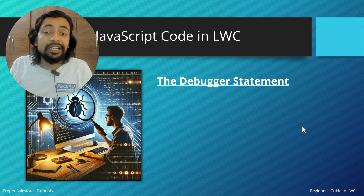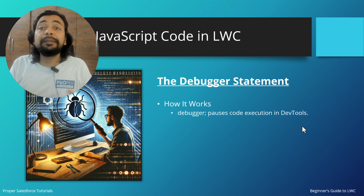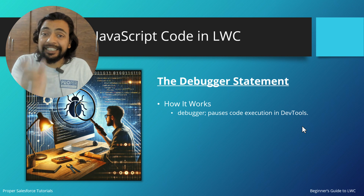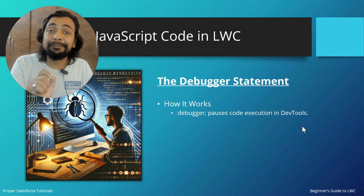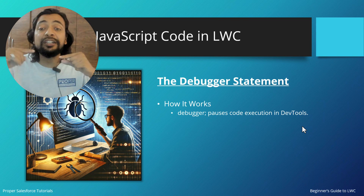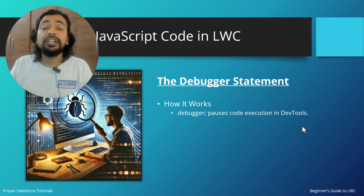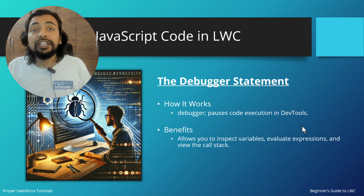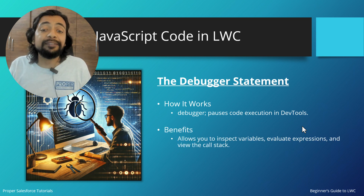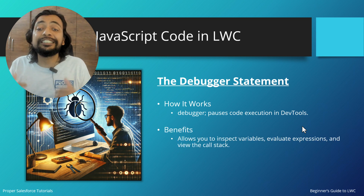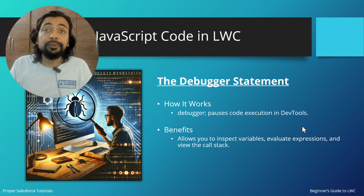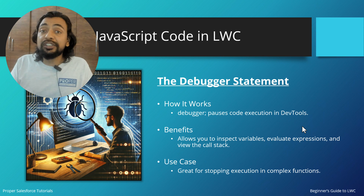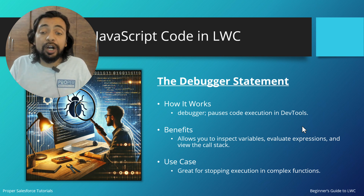The debugger statement is a statement written in the code that, as soon as it is executed, pauses code execution in the dev tool — just like adding a breakpoint. The benefits are that it allows us to inspect variables, evaluate expressions, and view the call stack. Its use case is to stop execution in complex functions.